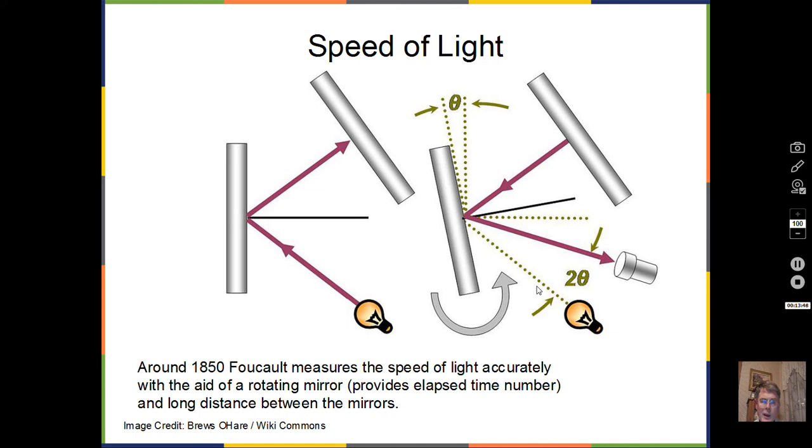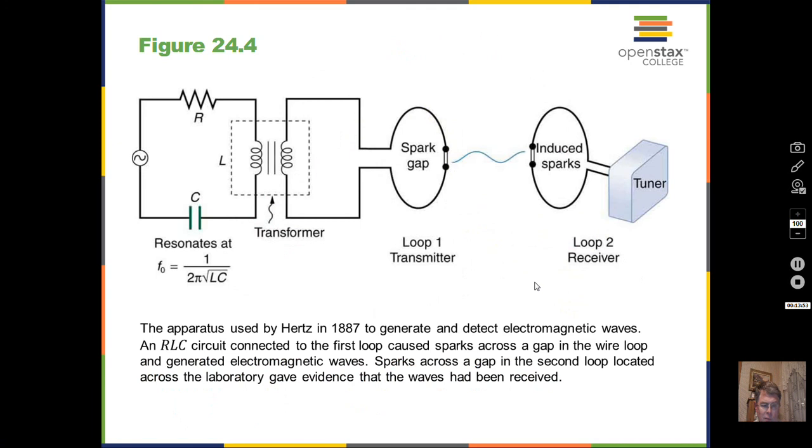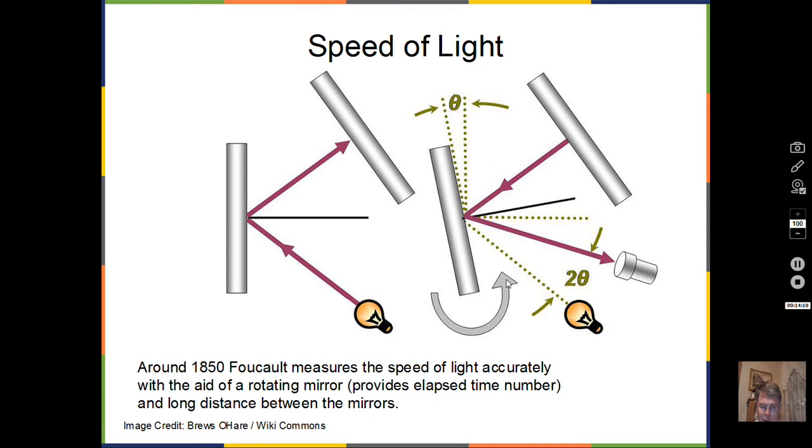This gives us a time measurement. If we know the speed of the rotating mirror, we can relate this to some small fraction of a second. And knowing the distance that the light has traveled divided by the time, we could get the speed of light. And again, we measure it around 3 times 10 to the eighth meters per second. So that was confirmation that Maxwell was correct. His mathematical equation predicts 3 times 10 to the eighth meters per second.